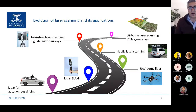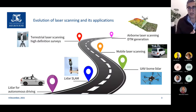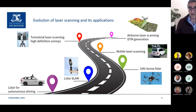Airborne laser scanning quickly showed advantages over photogrammetry — for example, you can easily filter out vegetation and create a bare terrain model. Then terrestrial laser scanners came to market for high definition surveys, allowing surveyors to capture millions of points very accurately instead of measuring one point at a time with total stations. Mobile laser scanning followed — integrating a laser scanner with a GNSS receiver and inertial measurement unit on a vehicle — and proved very suitable for capturing road environments and street furniture.